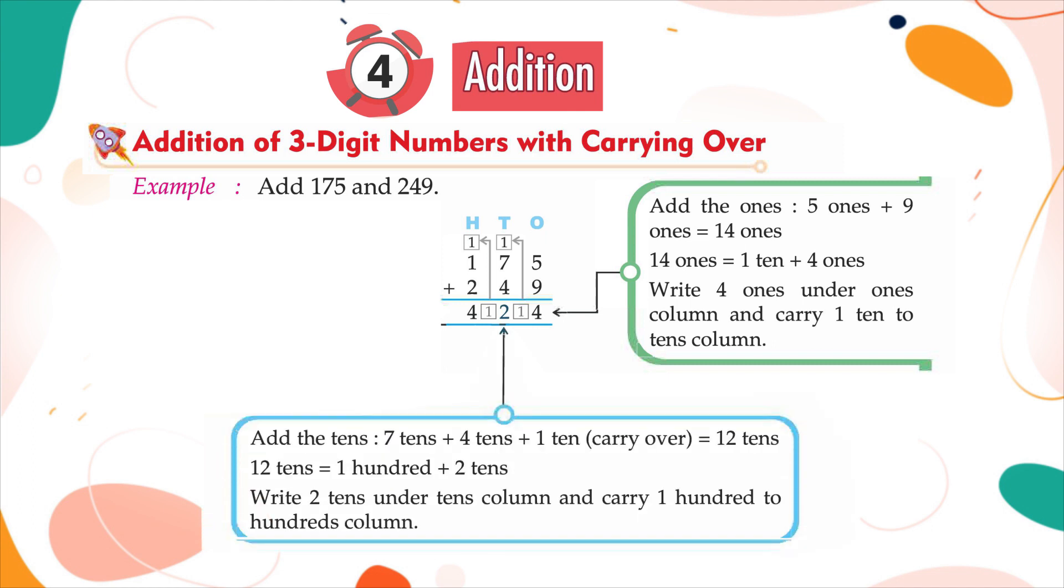Add the tens: 7 tens plus 4 tens plus 1 ten carry over is equal to 12 tens. 12 tens is equal to 1 hundred plus 2 tens.